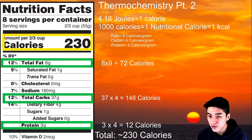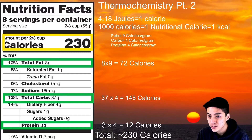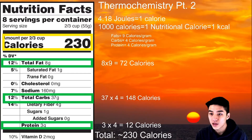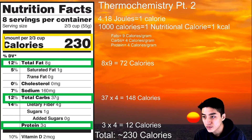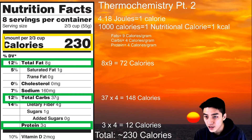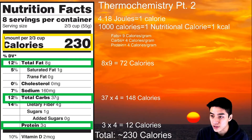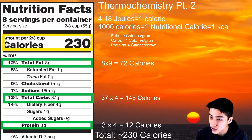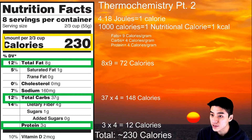So when you look at a food label and you look at the nutritional facts, the calories that you see printed really mean nutritional calorie, which is kilocalorie. Highlighted there in the yellow box, that's 230 nutritional calories, which is 230 kilocalories, or 230,000 little-c calories.